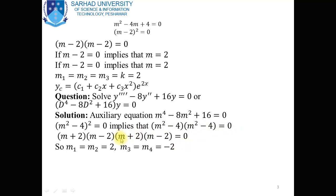(m² - 4)² = (m² - 4)(m² - 4) = (m + 2)(m - 2)(m + 2)(m - 2). Using the a² - b² formula, we get (m + 2)(m - 2) for each factor. There are four roots: m1 = m2 = 2 and m3 = m4 = -2. These two roots are real and repeated, and those two roots are also real and repeated.